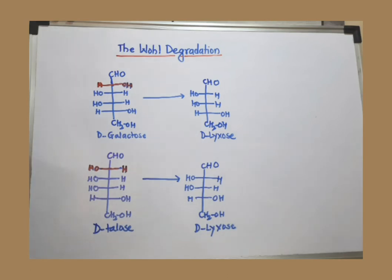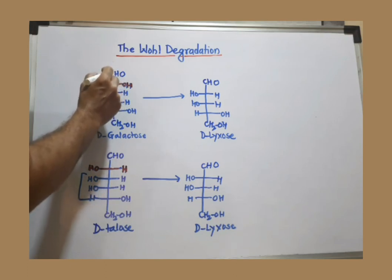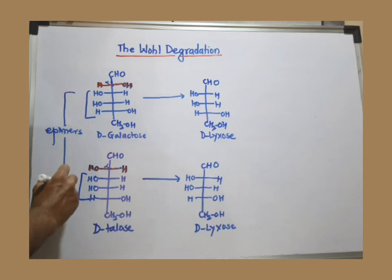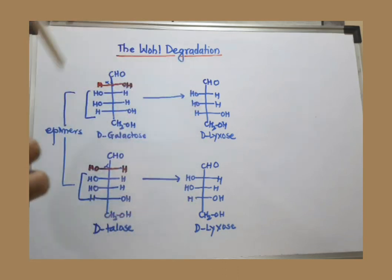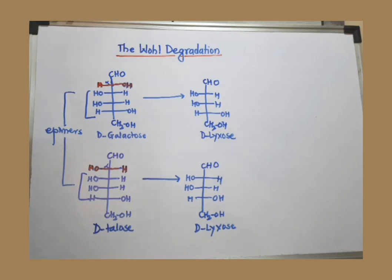Both D-galactose and D-talose are converted to D-Lixose. What is the relationship between D-galactose and D-talose? The portion from carbon 3 onward is similar in both monosaccharides; only the configuration at the alpha carbon — the carbon next to the carbonyl — differs. So these two are epimers. When Wohl degradation is performed with epimers, we get the same product — the same aldopentose. Two epimers can be converted into one monosaccharide using Wohl degradation, with one fewer carbon.